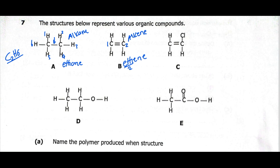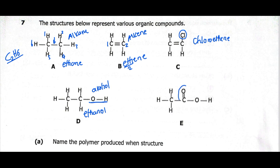Compound C is also an alkene, but because there is an atom of chlorine, we call this one chloroethene — it is ethene because of the double bond. For compound D, we can see we have OH. Whenever you see OH, these are alcohols. The name of this alcohol is ethanol. Then for E, we have the functional group COOH. Whenever you have COOH, this is a carboxylic acid. This will be ethanoic acid.